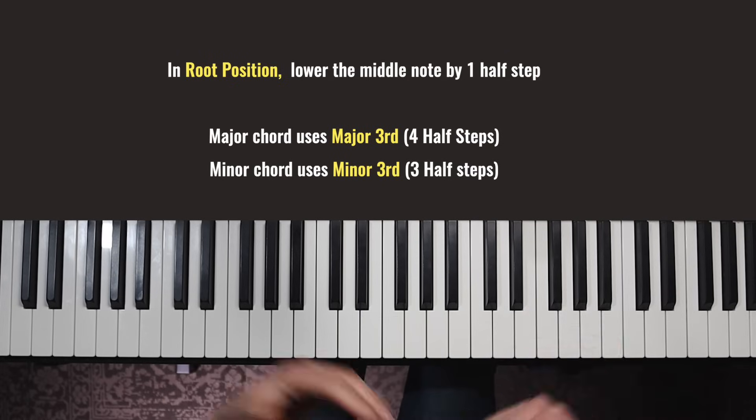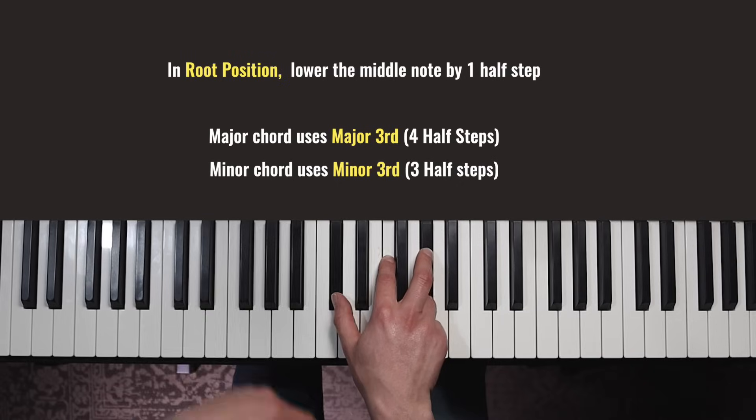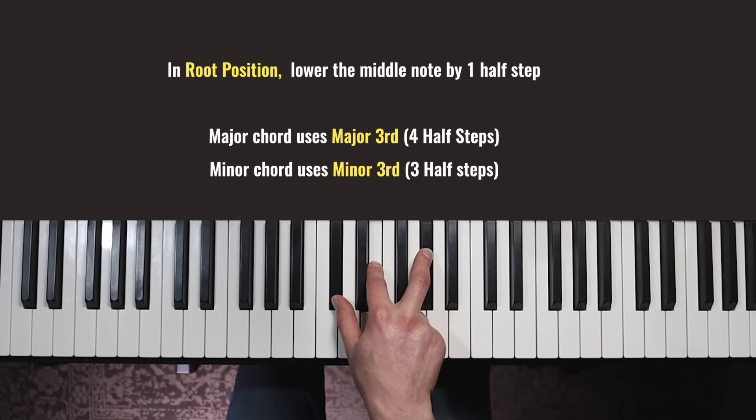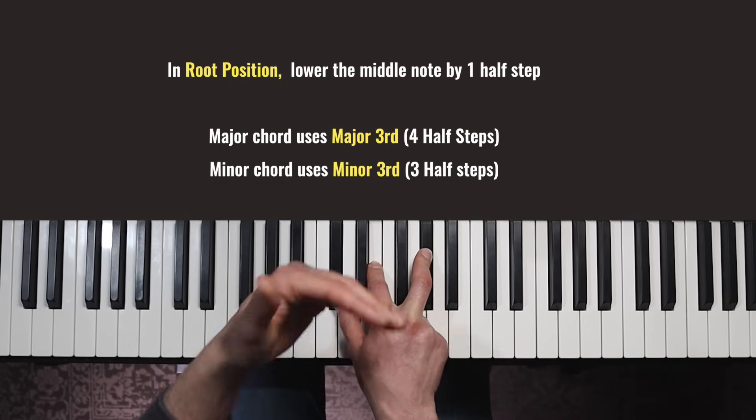So in those two groups, they all kind of switch around. If we look at the next group, turning D flat major into minor, we've got another white note in the middle here. That's because when we move that down a half step, there's no black key in between, so we still get the same kind of looking shape.